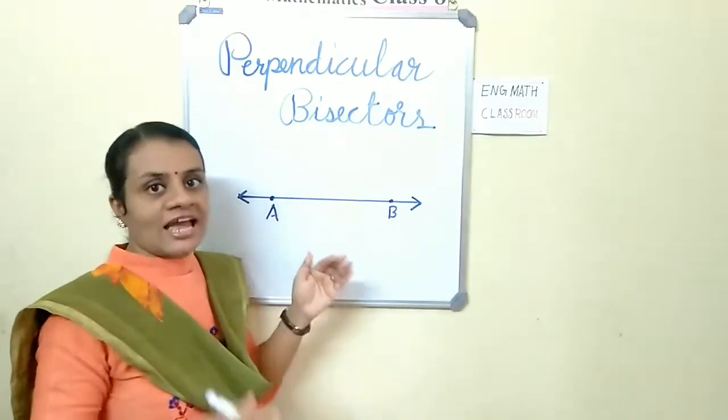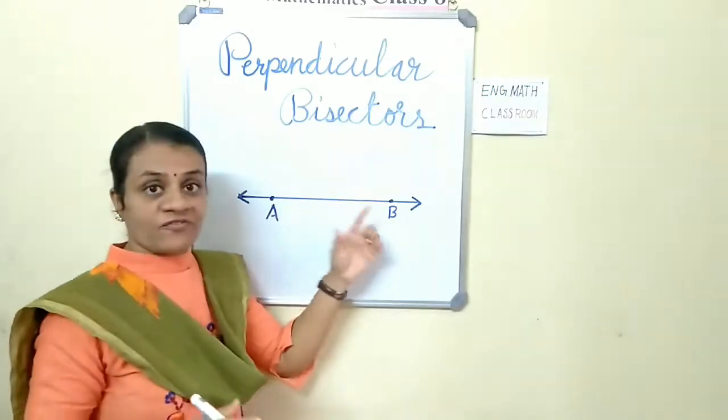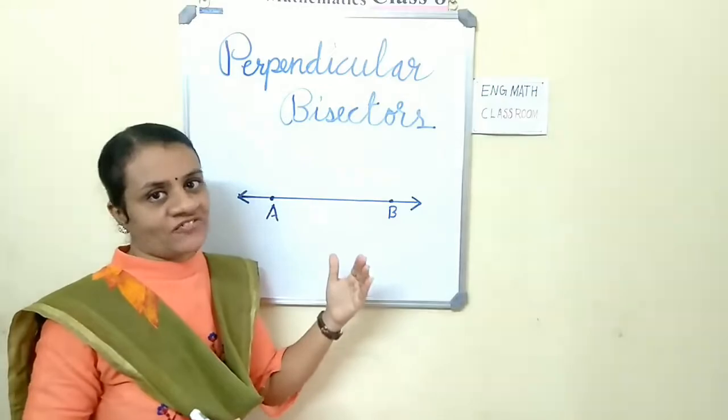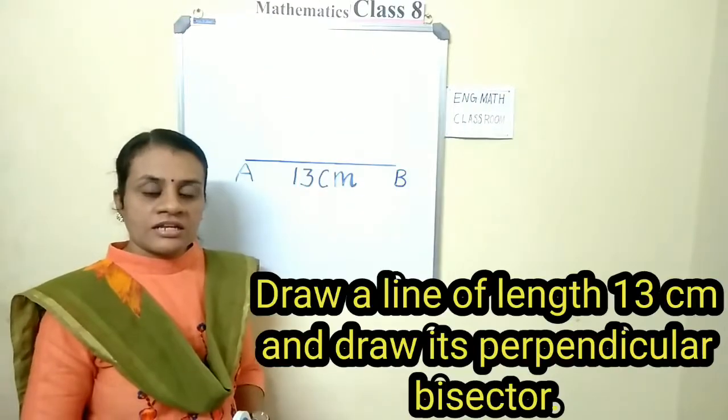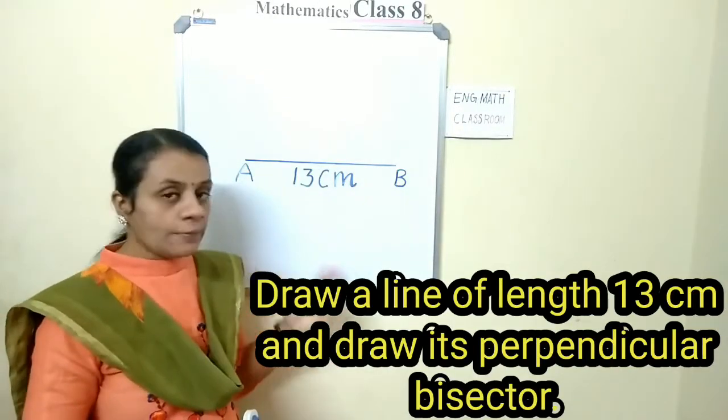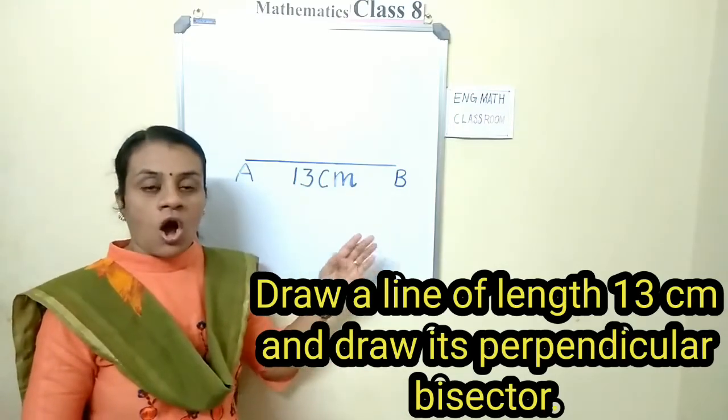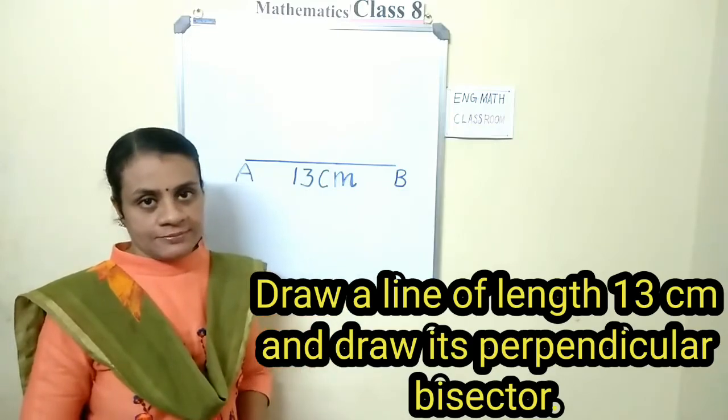So, line segment has two fixed end points and there is a definite length. Let's see how to draw a perpendicular bisector of a line of length 13 centimeters.